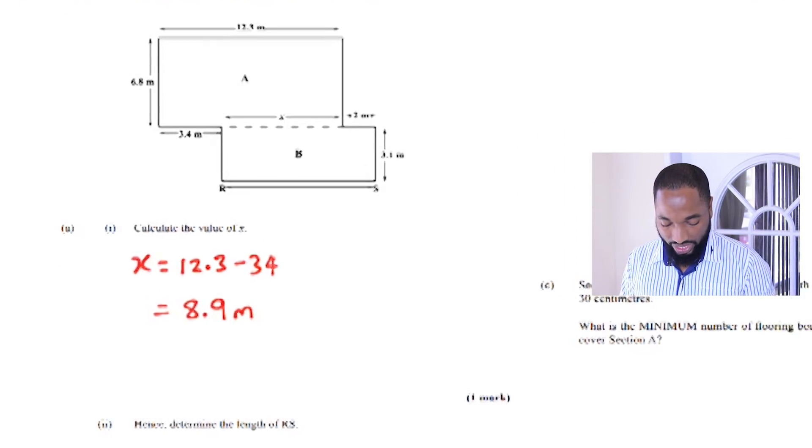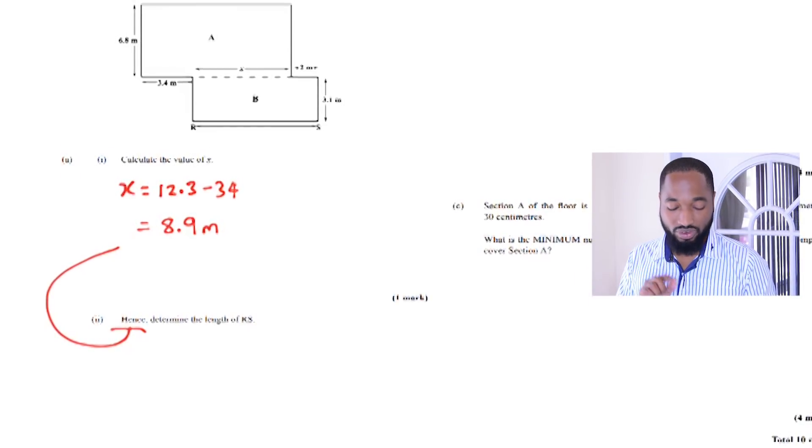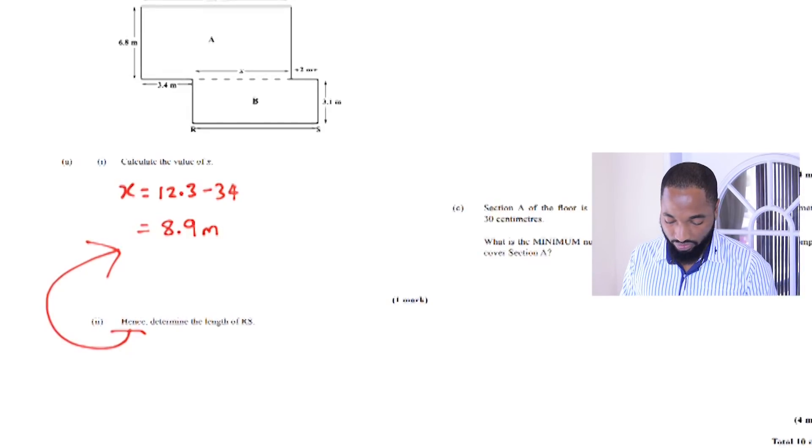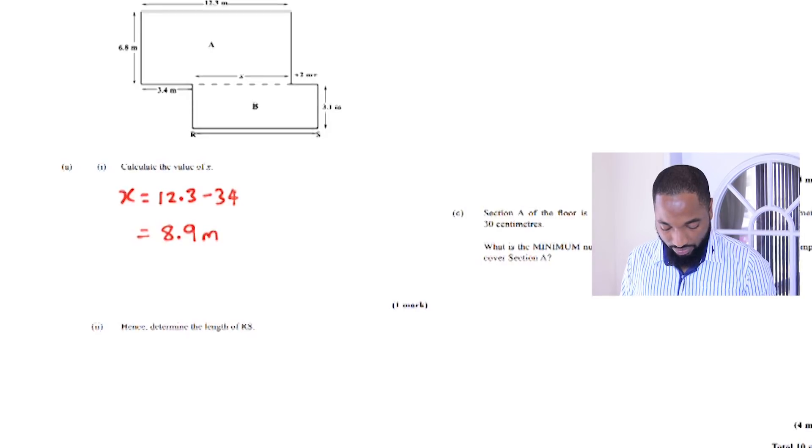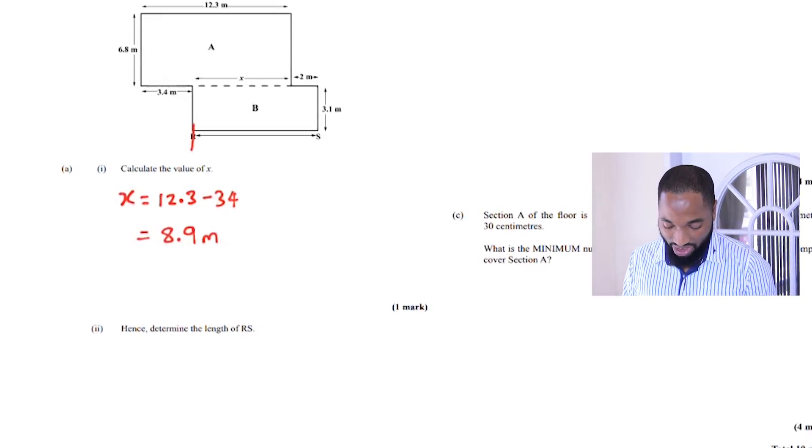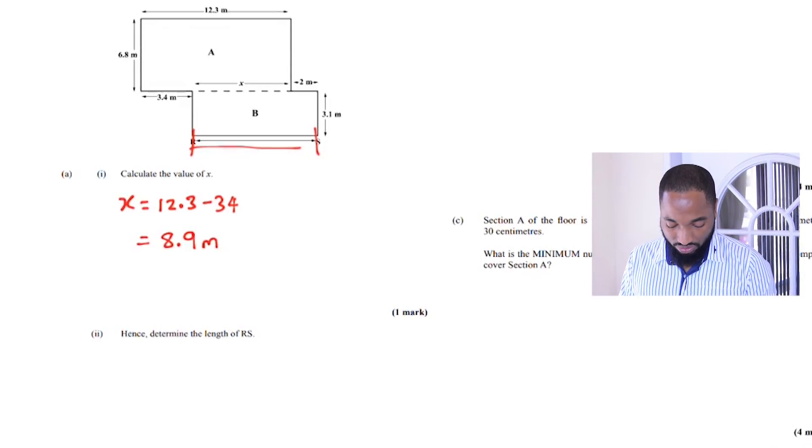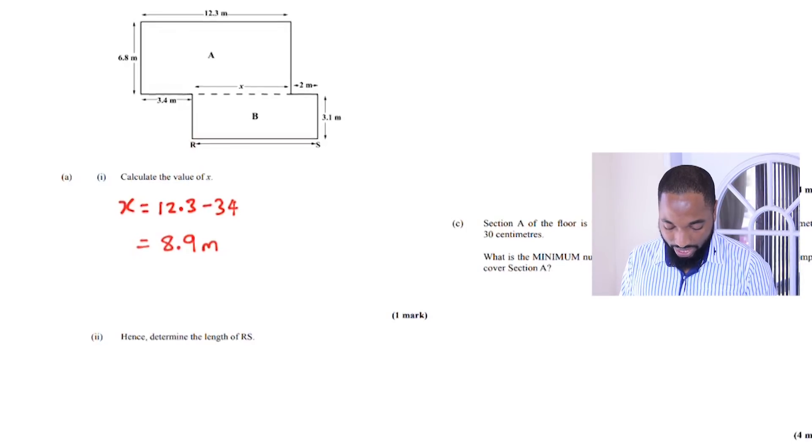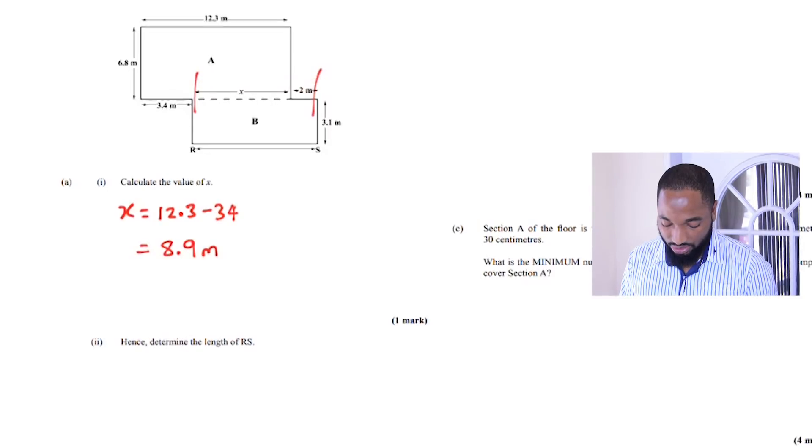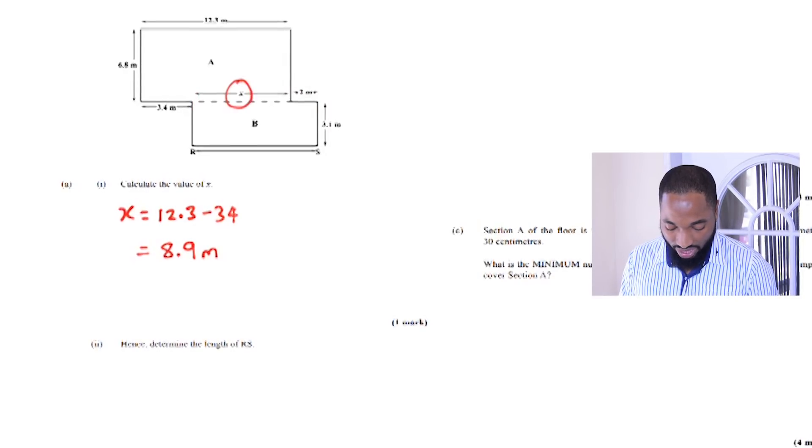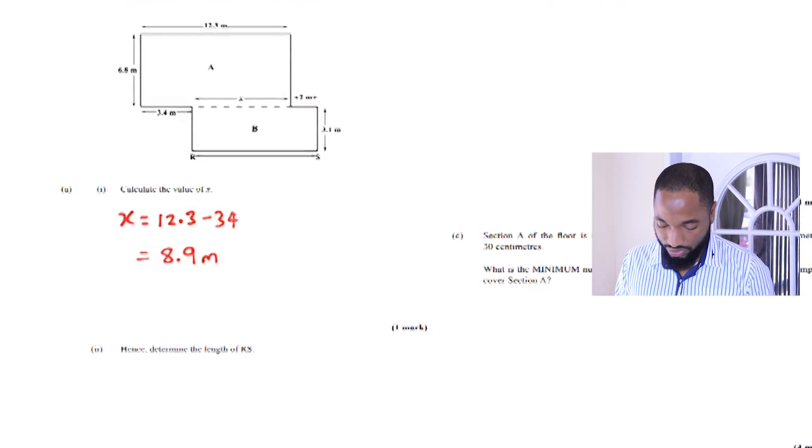8.9 meters, so we have the value of x. Then there's a hence. Every time the word hence is used, it means use the information from before. Hence, determine the length of RS. To find the length of RS, we can compare RS with this length here because rectangles have two equal sides. To get RS, we simply need to add this value that we got for x with this value for 2. That will give us the length RS.